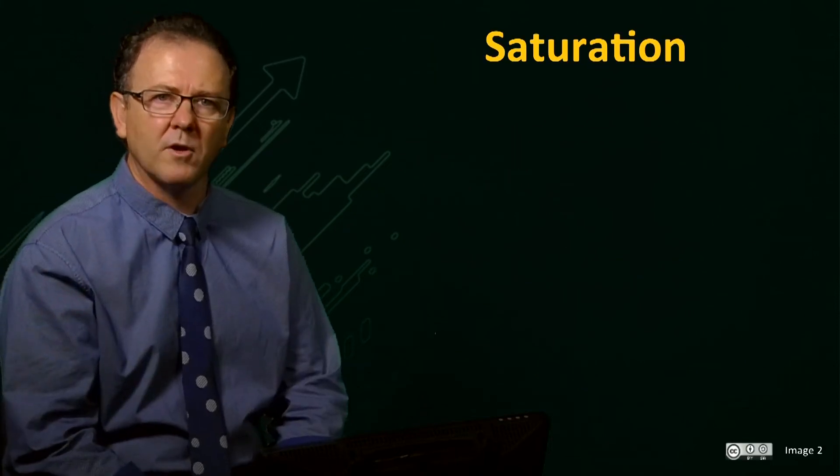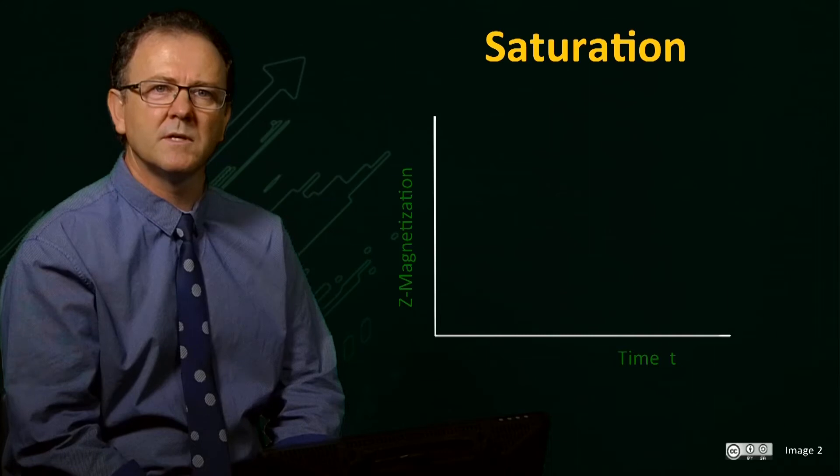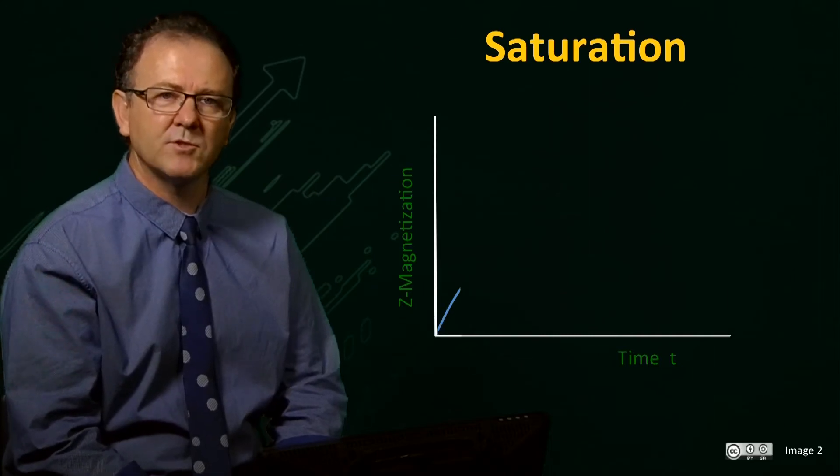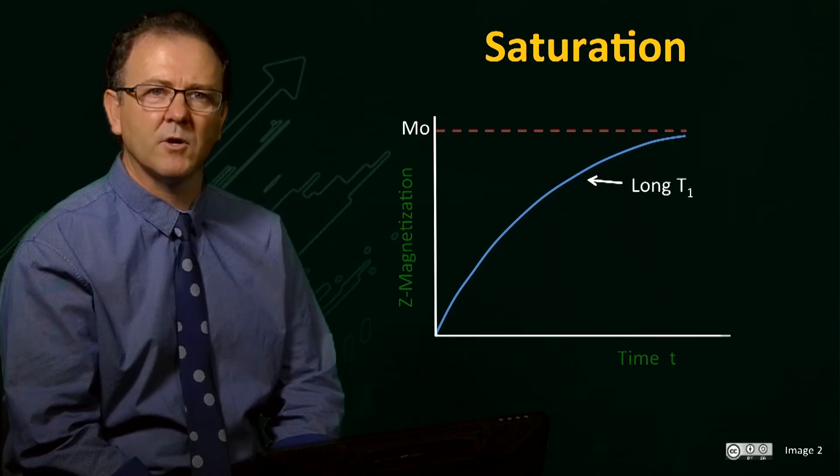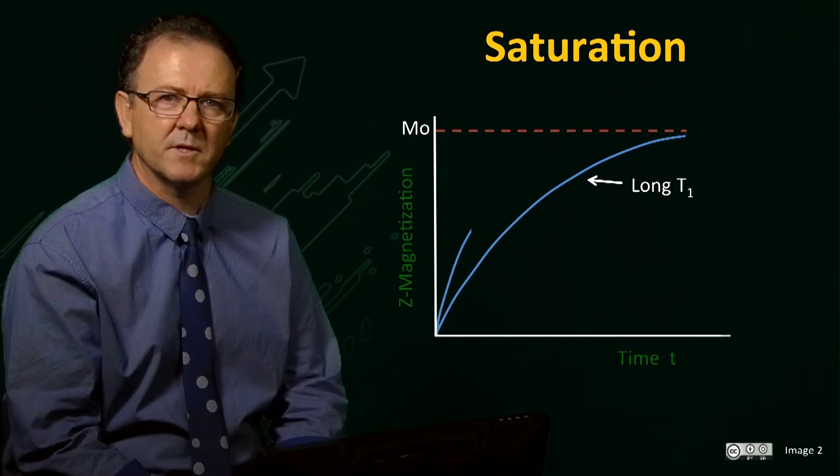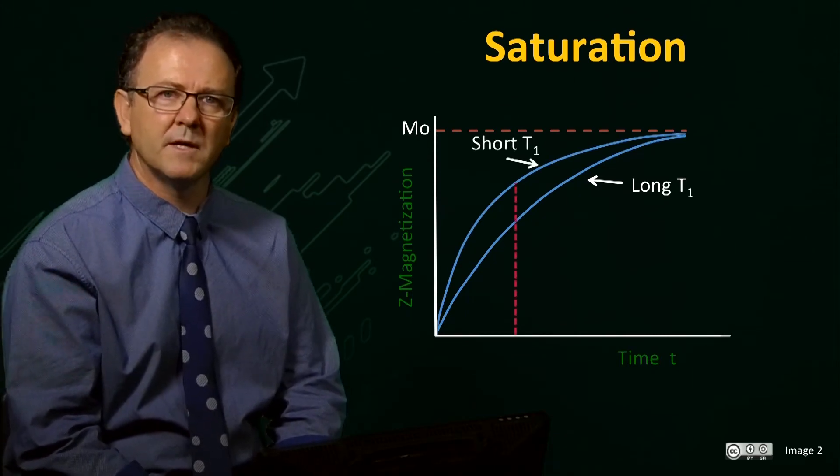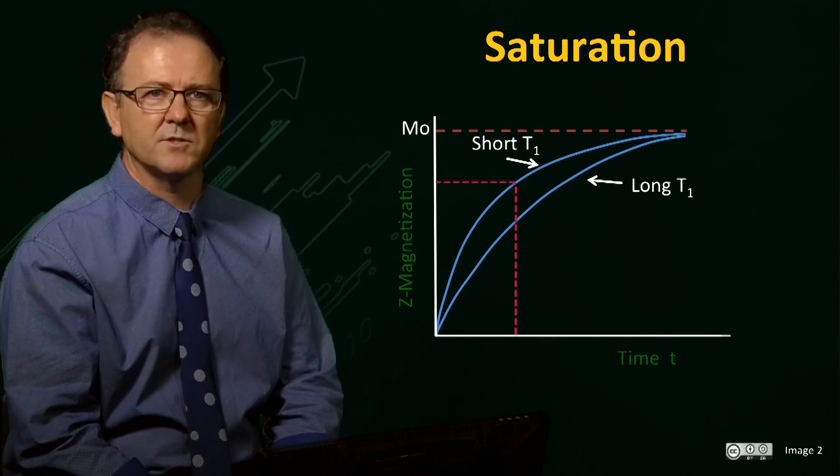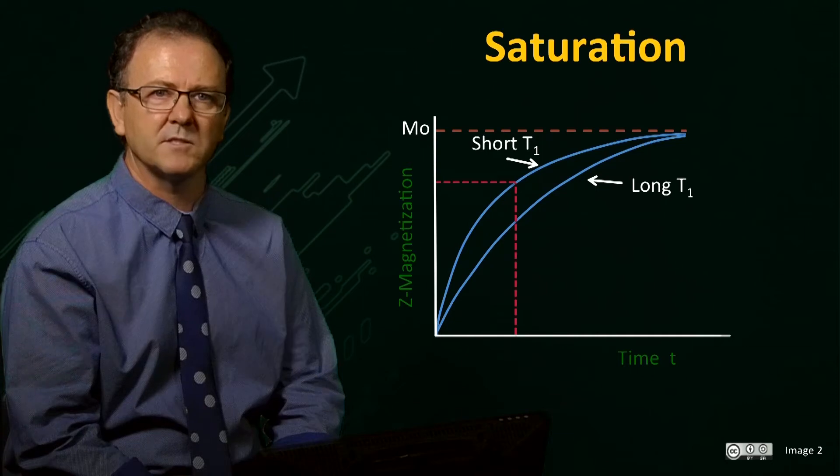If we were to plot the build-up of Z-magnetization following a 90-degree pulse, the recovery follows an exponential curve that returns towards M0 and is characterized by the T1 value. A faster relaxing spin would follow a steeper curve. So, for a particular point in time, the faster relaxing magnetization will have recovered further along the Z-axis than the slower relaxing spins.